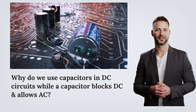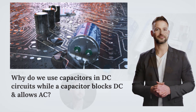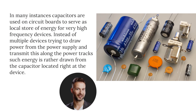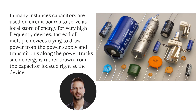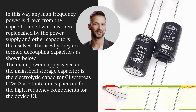Why do we use capacitors in DC circuits while a capacitor blocks DC and allows AC? In many instances, capacitors are used on circuit boards to serve as a local store of energy for very high-frequency devices. Instead of multiple devices trying to draw power from the power supply along the power track, such energy is drawn from the capacitor located right at the device. Any high-frequency power is drawn from the capacitor itself, which is then replenished by the power supply and other capacitors.